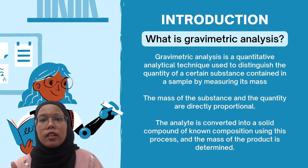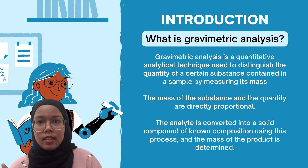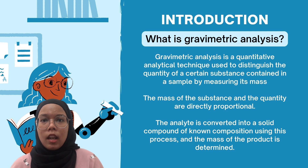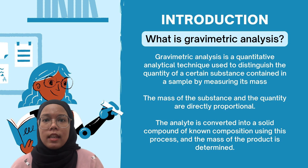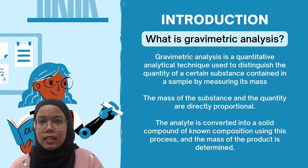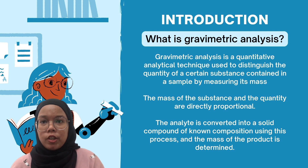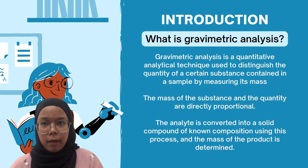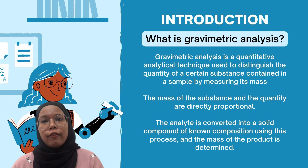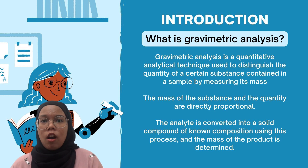What is gravimetric analysis? Gravimetric analysis is a quantitative analytical technique used to determine the quantity of a certain substance contained in a sample by measuring its mass. It is based on the principle that the mass of the substance and the quantity are directly proportional. The analyte is converted into a solid compound of known composition, and the mass of the product is determined.